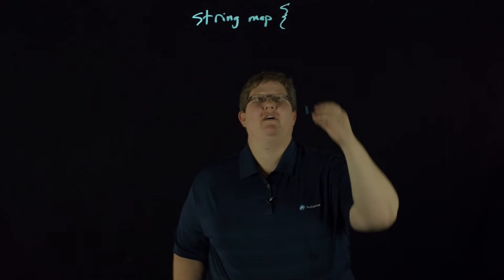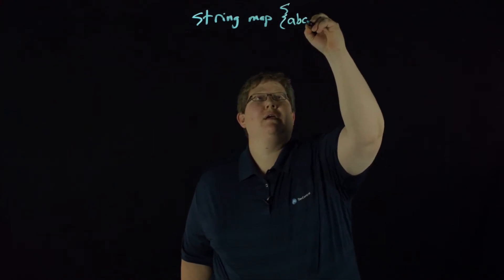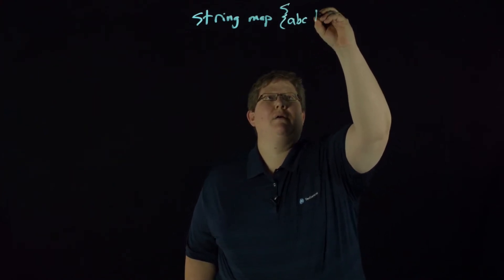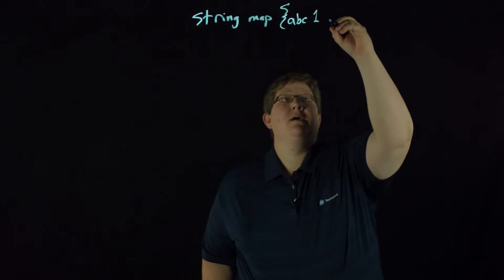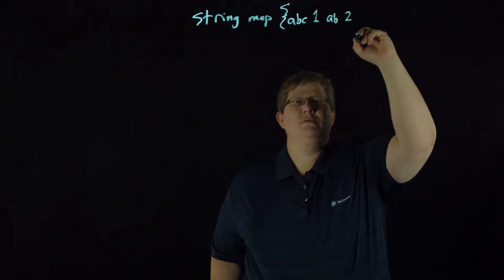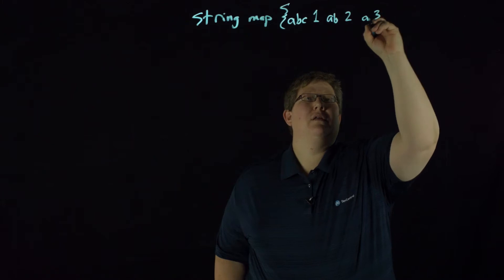String map, and then in the curly brackets this is where our mappings are. So we have ABC we're going to map to the number one, and then AB we're going to map to the number two, and then A to the number three.